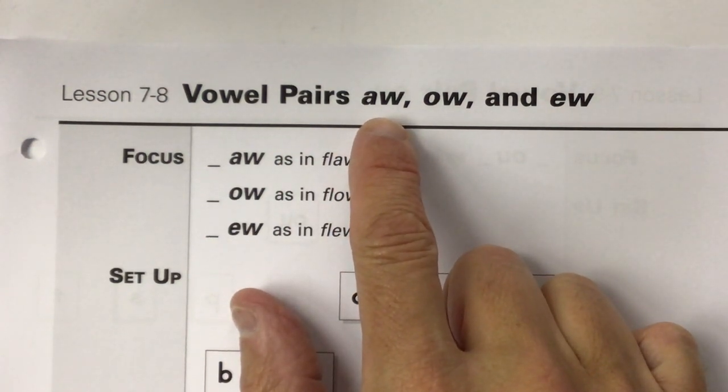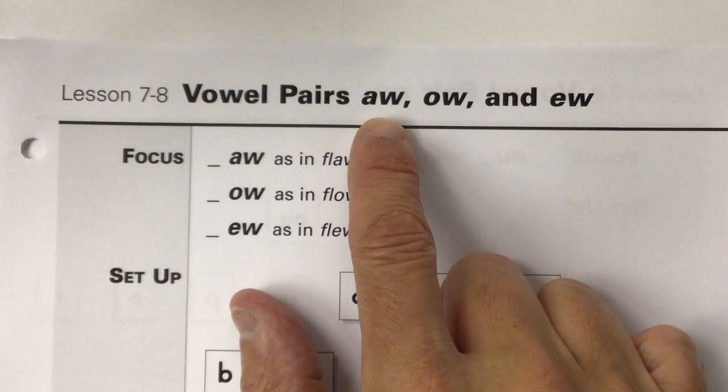A-W. A-W says ah, like you see something cute. It's the short O sound, ah.